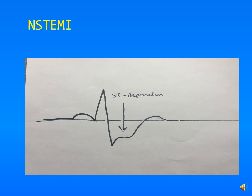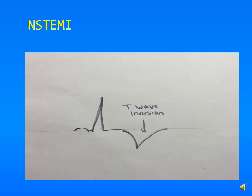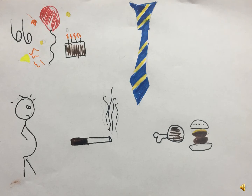A non-STEMI involves ischemia as well, but there is no ST-segment elevation. What you'll see instead is ST-segment depression at times, and other times T-wave inversions. These findings can also appear in a STEMI, but the key differentiating factor between a STEMI and a non-STEMI is ST-segment elevation.